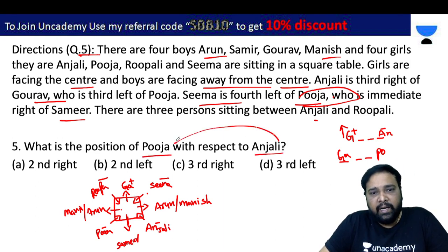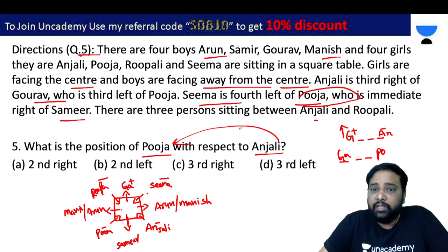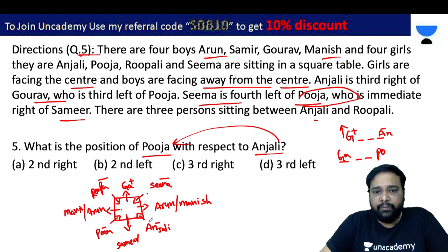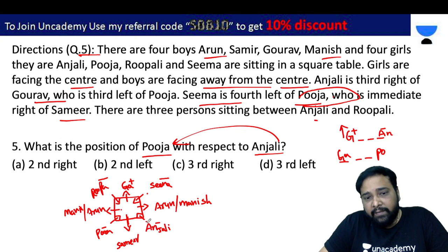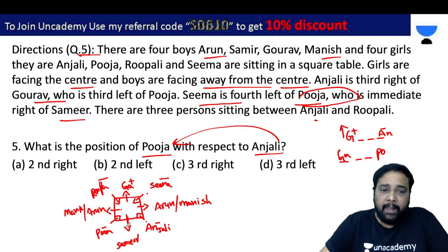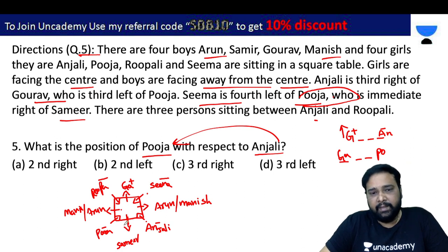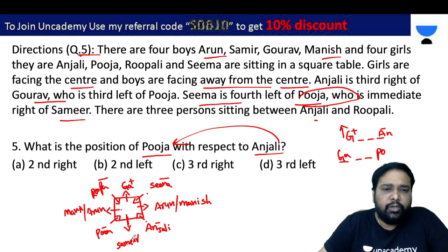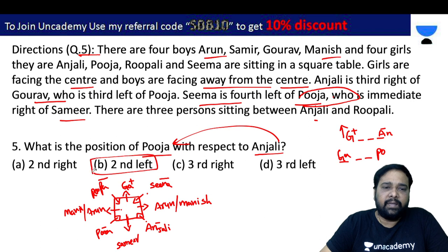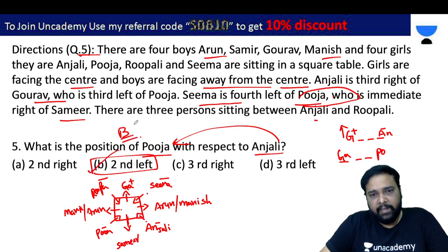If you have the position of Anjali, you can look at the position on the left side. The second position on the right side counts as 1, 2, 3, 5, 6. Second left is 6th right. The answer is B, second option, for problem number 5.